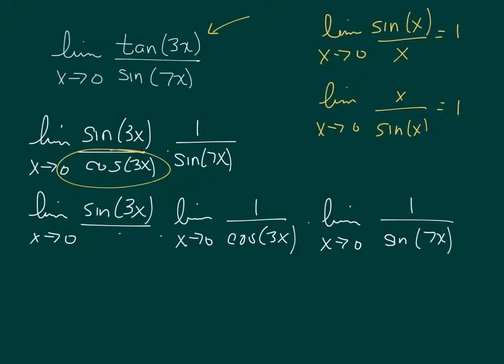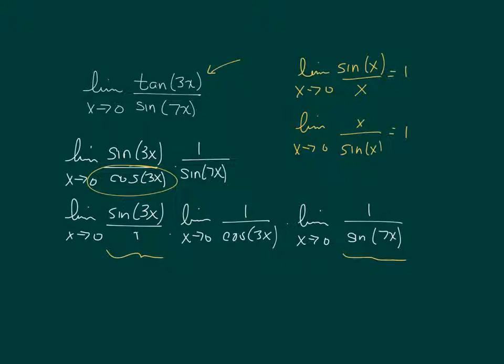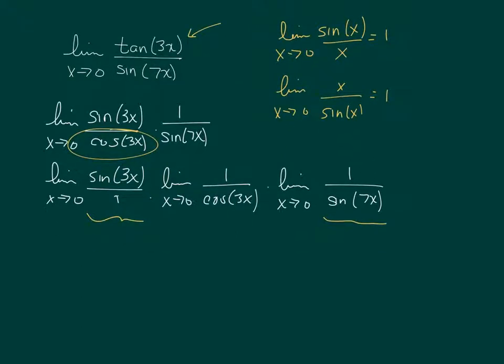And I can even put that over 1. So as you can see with these pieces, this piece would be wonderful if it was sine of 3x over 3x. This piece would be wonderful if it was 7x over sine of 7x. Well, I can do that by multiplying every term by 1.